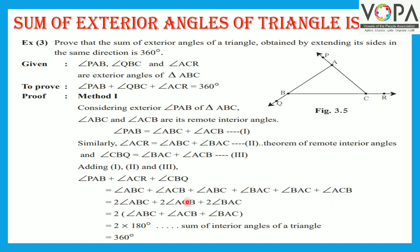Now, grouping the terms: angle ACB plus angle ACB gives 2·angle ACB, and angle BAC plus angle BAC gives 2·angle BAC. After taking out 2 as a common factor, what is left in the bracket is angle ABC plus angle ACB plus angle BAC — the sum of the interior angles of triangle ABC, which equals 180 degrees. Substituting, we get 2 into 180, which equals 360 degrees. Here is the proof.